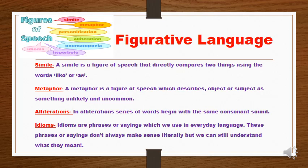Metaphor. A metaphor is a figure of speech which describes objects or a subject as something unlikely and uncommon. For example, 'the curtain of night fell upon us' — and it doesn't use the words 'like' or 'as.' Alliteration: in alliteration, a series of words begins with the same consonant sound. It means that the consonant sounds are repeated.